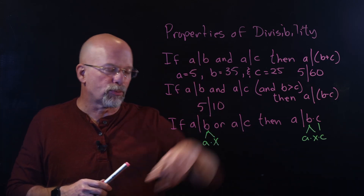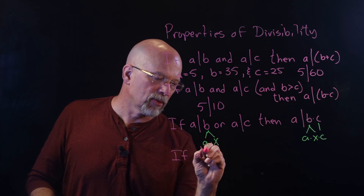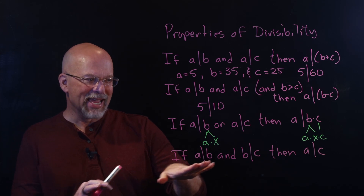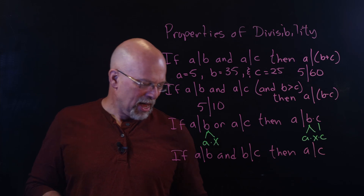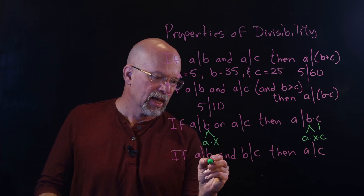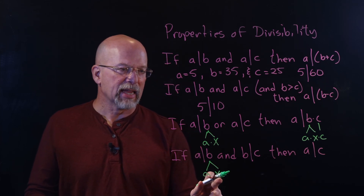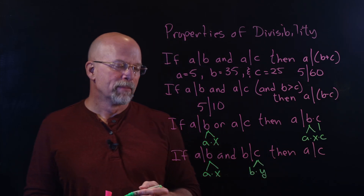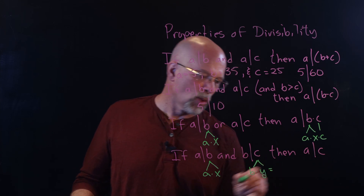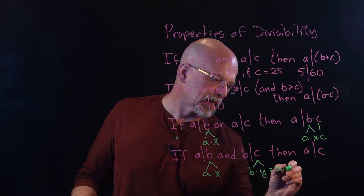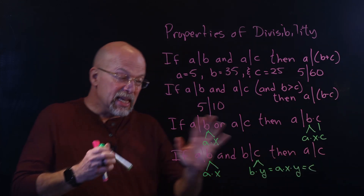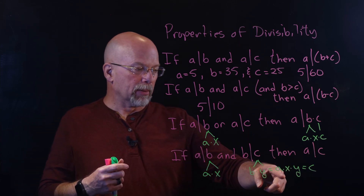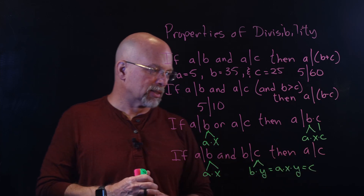These are not proofs — just examples showing how the properties work. One last property: if A divides B and B divides C, then A divides C. If A divides B, there's some X where A times X equals B. If B divides C, there's some Y where B times Y equals C. Substituting, we get A times X times Y equals C, meaning A is a factor of C — so A divides C.